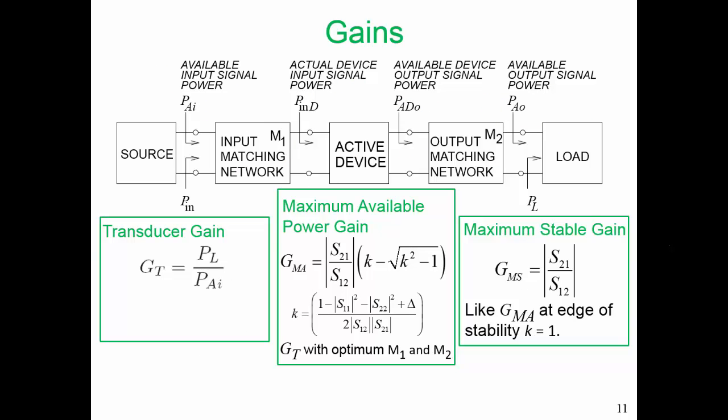In this part, I want to talk about measures of gain. There are many measures of gain. The gain that we want in the end is properly defined as the transducer gain. The transducer gain GT is the power actually delivered to the load divided by the power available from the source. But we can define power in our circuit many ways, and using those different definitions of power, we can define various measures of gain. But we're going to focus on transducer gain for the moment.